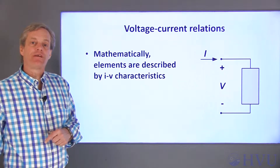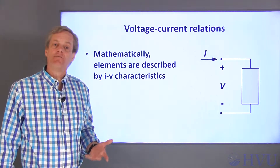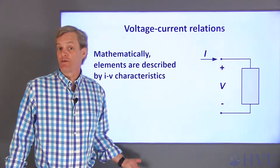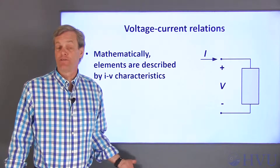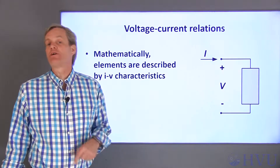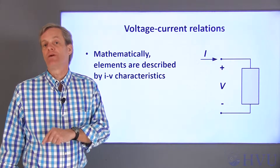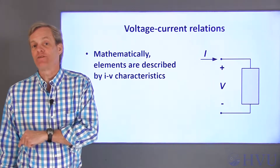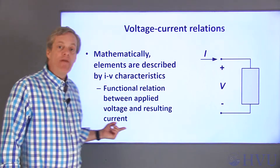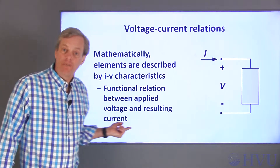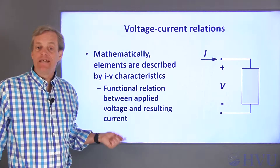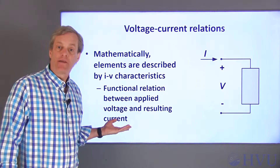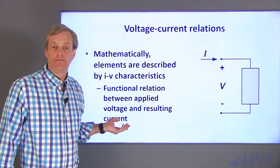Since the voltage-current characteristic governs the relationship between voltage and current at the terminals of the element, it tells us what current will correspond to a given voltage difference at the terminals. We use the mathematical function relating voltage and current when we model the behavior of the circuit element.